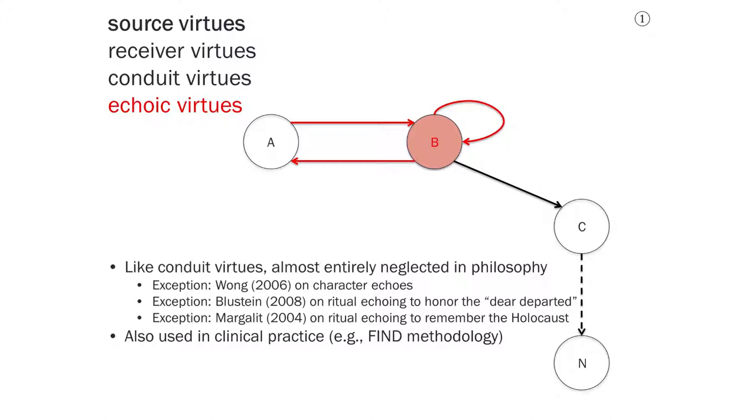Two other examples are the philosophers Bluestine and Margolit, who've written about ritual echoing specifically of people who've died. Bluestine speaks about the dear departed, so family and friends who've died, and Margolit specifically focuses on the Holocaust and the duty to remember this atrocity and others like it. Both of them point out that memory is fragile and that one way to strengthen memories, one way to ensure that we don't forget, is to repeat, either to ourselves or to each other, sometimes in ritualized ways.